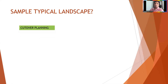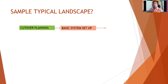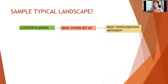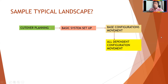First you do cutover planning — what configurations are required, what table maintenance is required (configurable table maintenance or SM30 maintenance). What master data is required. Cutover planning is done first, then basic data setup. When the production system is ready as a standalone system with a different client, you do all configuration there. Then you move configuration from development to production — this is the standard landscape followed even in support projects.